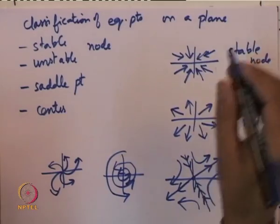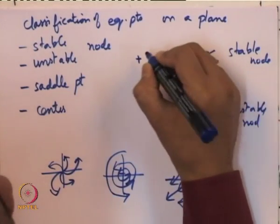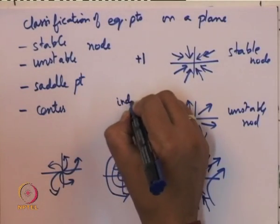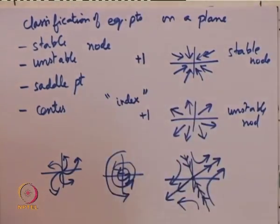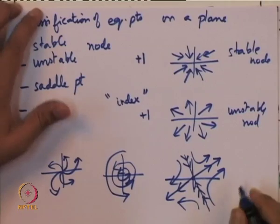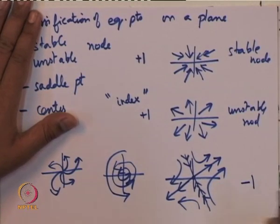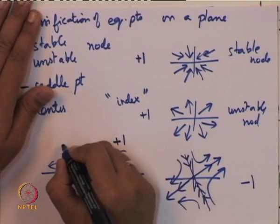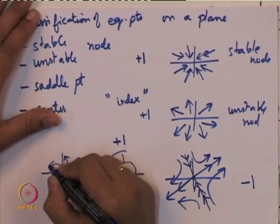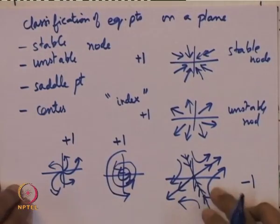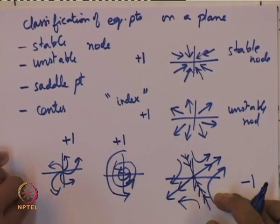We would like to classify all these as something called the index of the vector field. The stable and unstable nodes have index +1, the center and stable/unstable focus also have index +1. Only the saddle point is special — its index turns out to be −1.